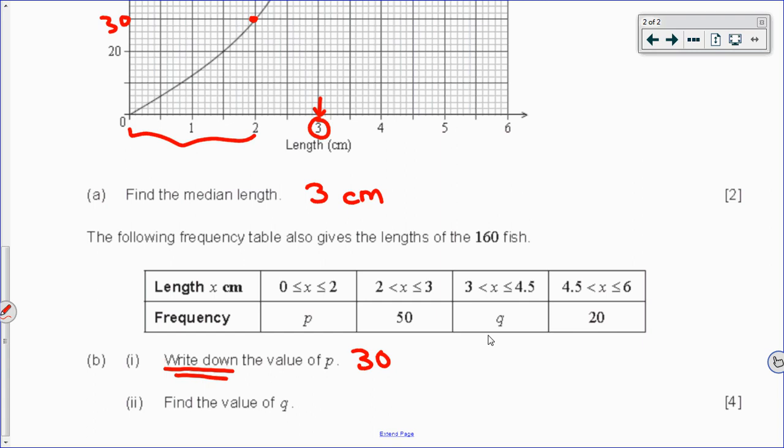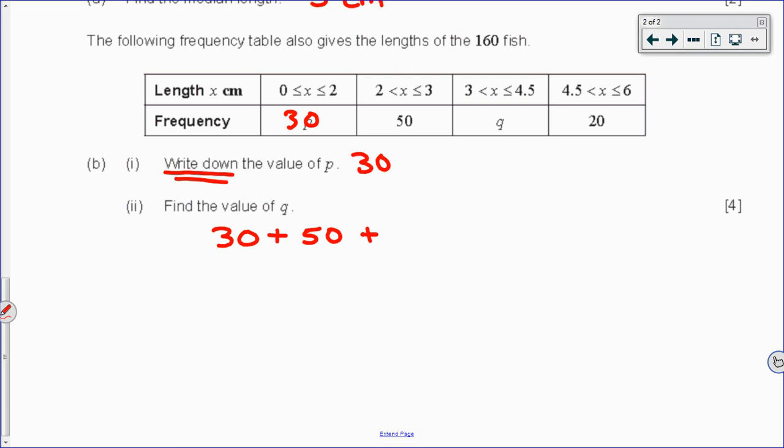So the value of Q should be pretty simple. If we know that there's a 30 here on the table, and we know that the total frequency of fish was 160, the work to show is simply the equation that the sum of each of those numbers must equal 160. So 30 plus 50 plus Q plus 20, or some version of this equation, or some step of this equation must equal the total frequency. So here we have 100 plus Q. Am I adding that right? 100 plus Q equals 160. And therefore, Q equals 60. So that's one way to do it, to find the value of Q.